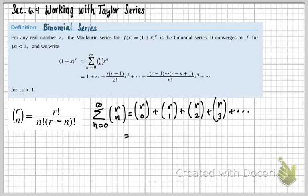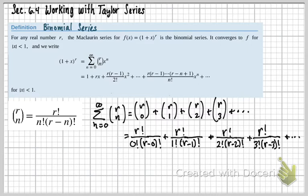So what is R choose 0? So if I look at my formula off to the left here, that means it's going to be R factorial over 0 factorial times R minus 0 factorial. Now I'm just going to continue with the other ones, just to show you what it looks like together.